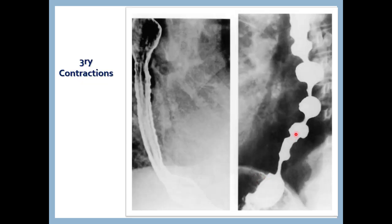Here we see contrast material filling the tubular esophagus, but there are multiple areas of narrowing and areas of dilatation along its course. This disease is called tertiary contractions of the esophagus — multiple non-functioning, non-propulsive contractions occurring in the esophagus, presenting with severe chest pain, dysphagia, and pain during swallowing. Detected by barium swallow. Full comment: barium swallow showing multiple tertiary contractions of the esophagus.